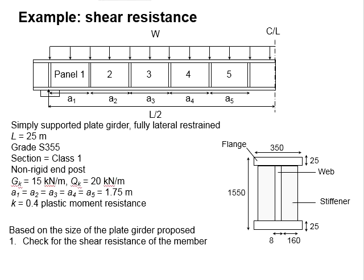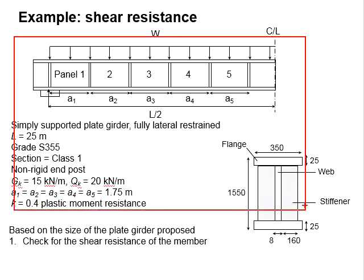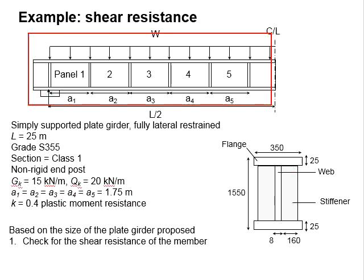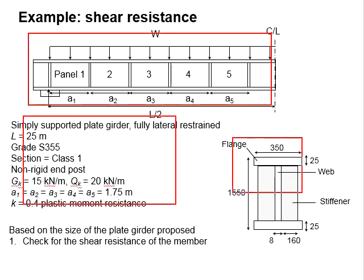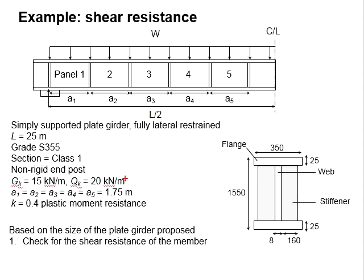Let us try an example to determine the shear resistance of a plate girder. Again, we are using the same tutorial questions. The dimensions and specifications are the same as we discussed in the previous video. Now we are to check the shear resistance of the member. You may pause the video for a while for you to work out the solution.